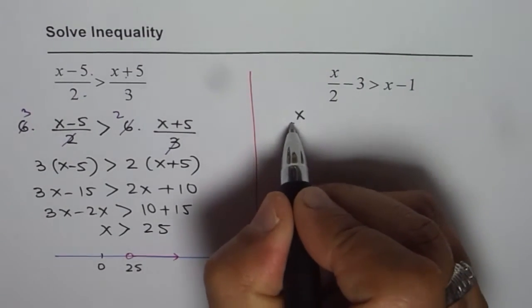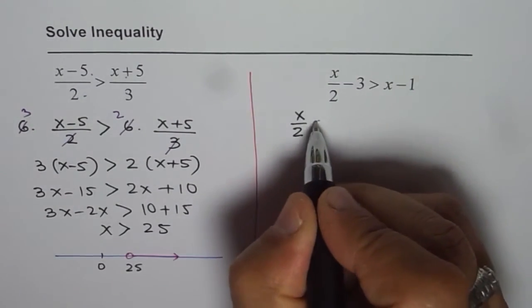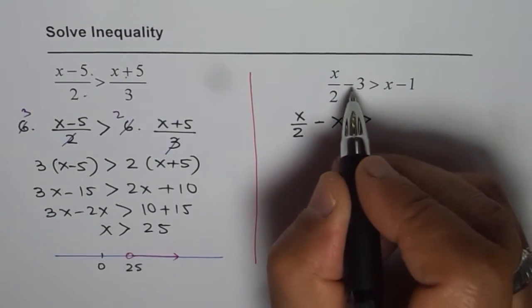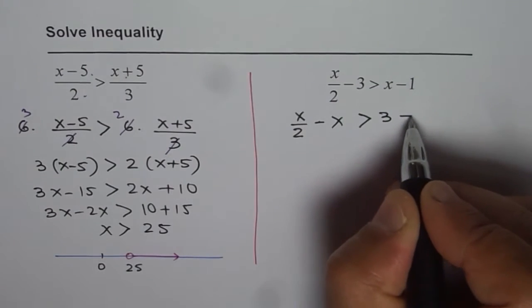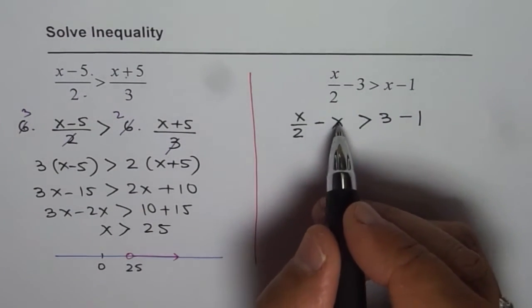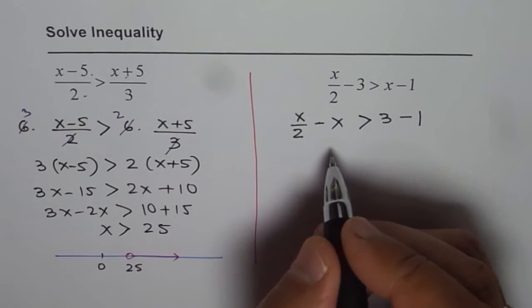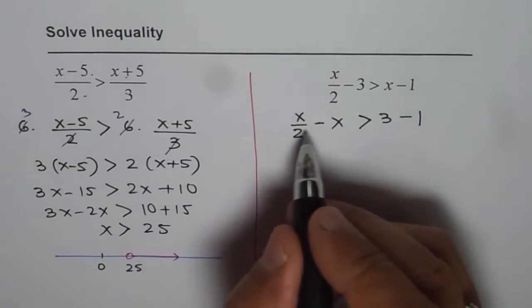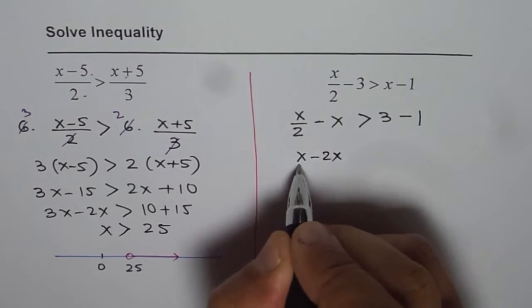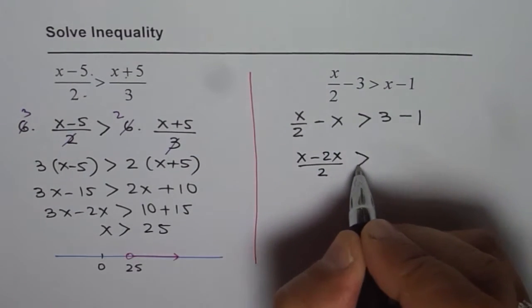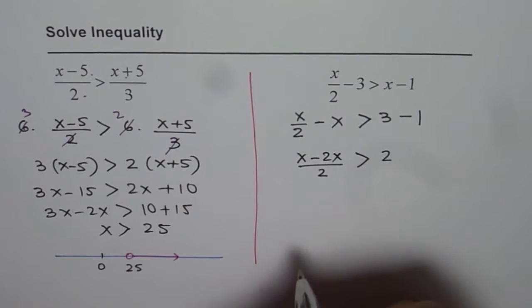So we can write this as x over 2 take away x greater than if I take 3 on the right side, it becomes plus 3 minus 1. Now x over 2 minus x is minus half x, correct? Or you can take common denominator and do it. This x minus 2x over 2 is greater than 3 minus 1 is 2.